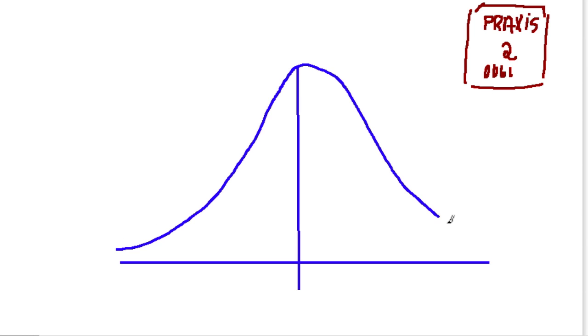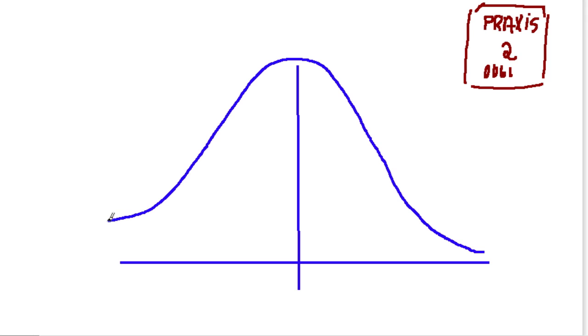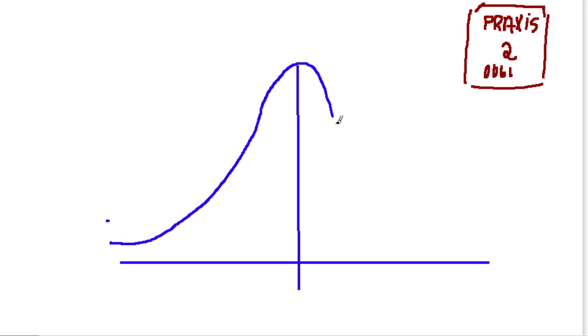In the first question, we're told that the lifetime of a certain type of disposable razor is normally distributed. So we'll set up a normal curve, place our mean, and then do our best to estimate the curve. It's going to climb up to the mean, and then peak down, and it should be symmetric. That is a terrible normal curve, but it's the best one I've drawn so far.